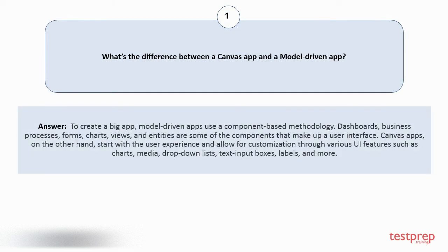To create a big app, model-driven apps use a component-based methodology. Dashboards, business processes, forms, charts, views, and entities are some of the components that make up a user interface. Canvas apps, on the other hand, start with the user experience and allow for customization through various UI features such as charts, media, drop-down lists, text input boxes, labels, and more.